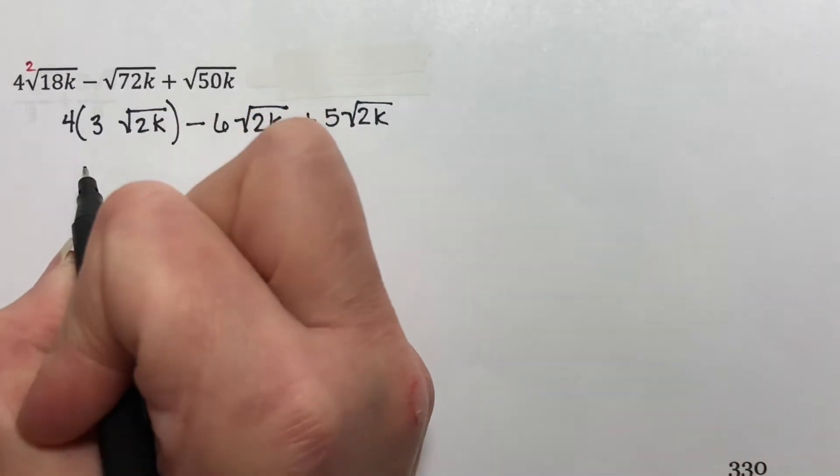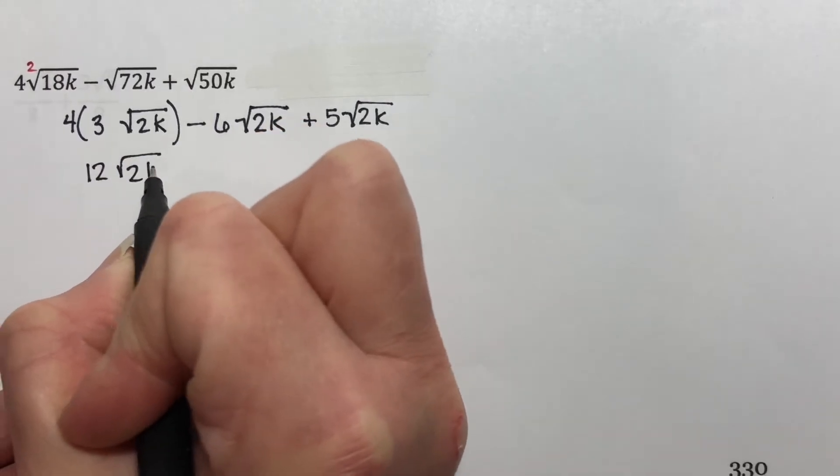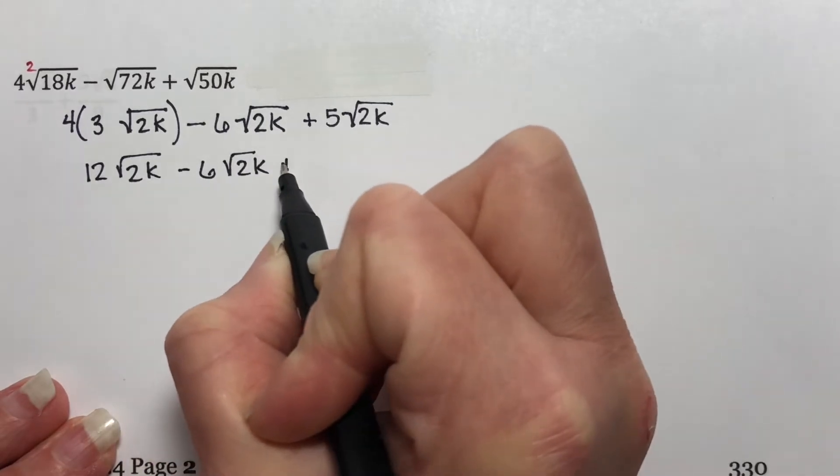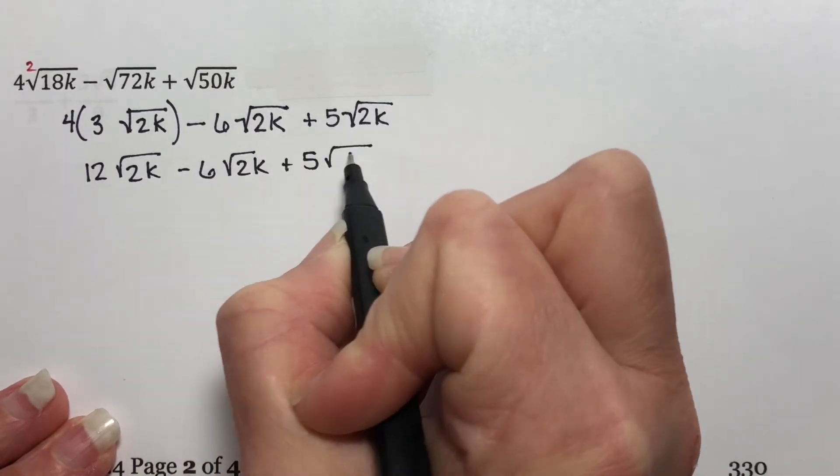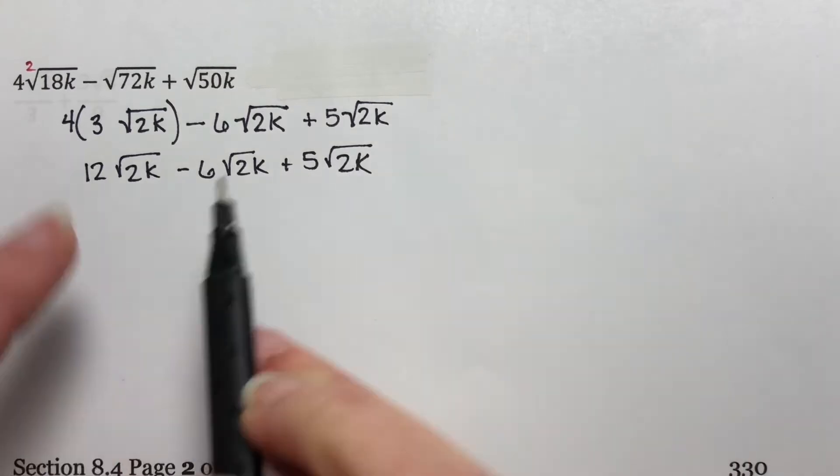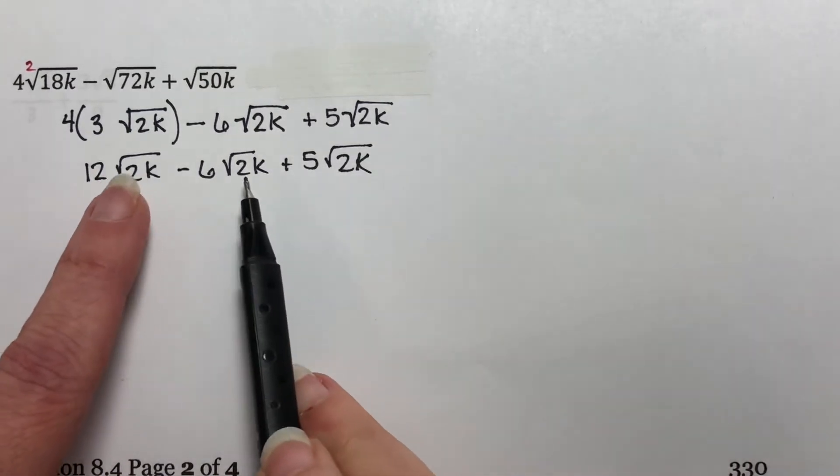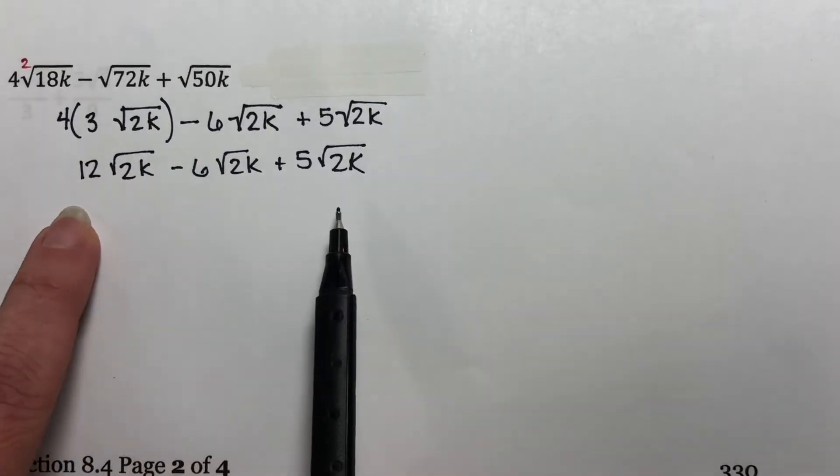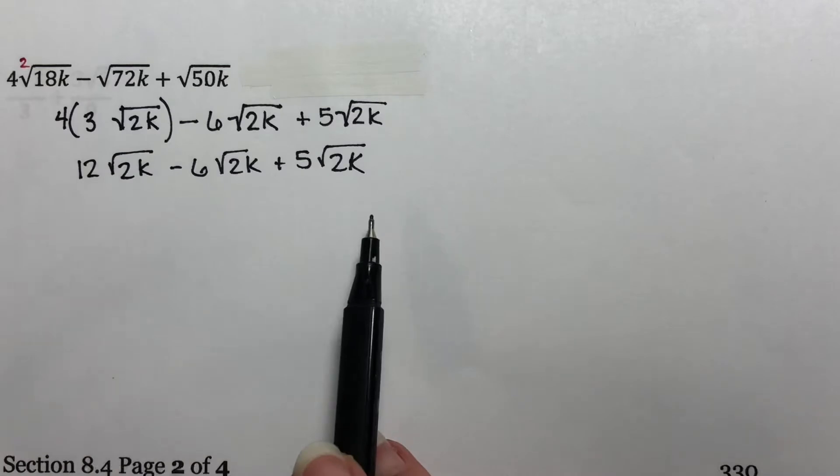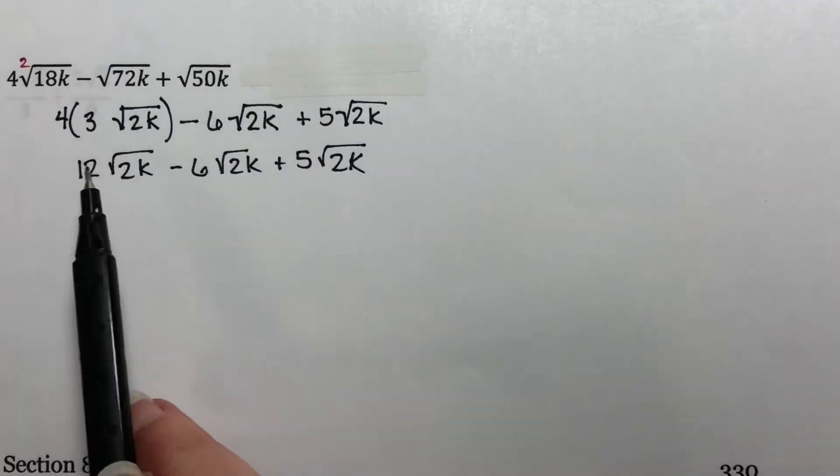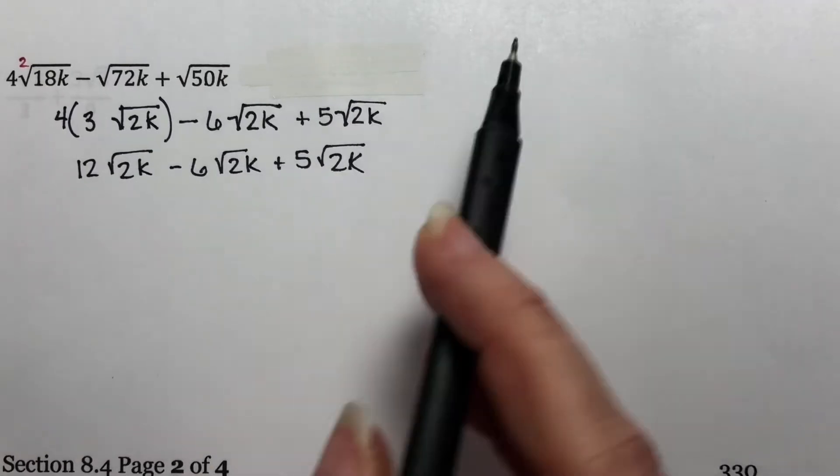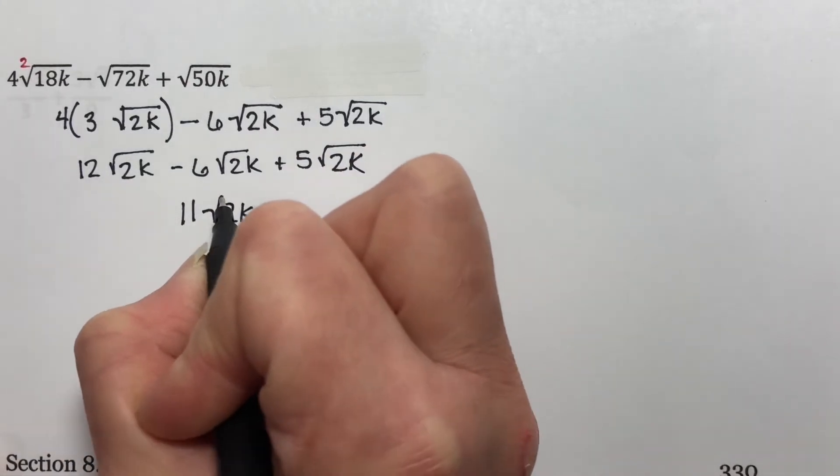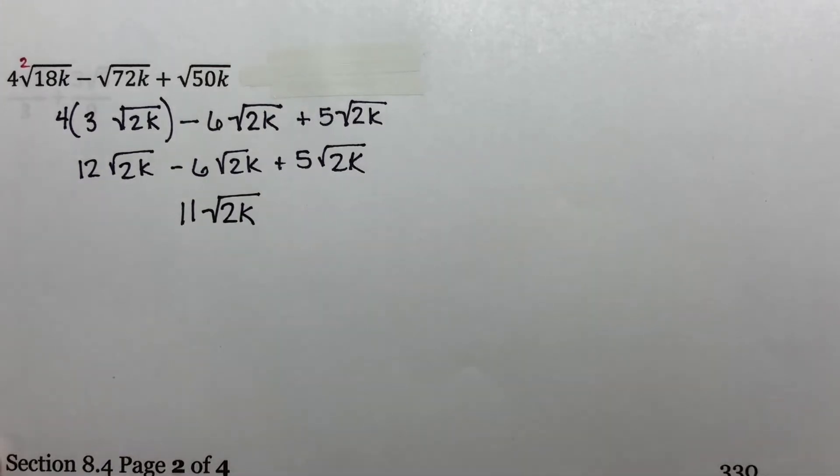So what I have here is 12 times the square root of 2k minus six times the square root of 2k plus five times the square root of 2k. Now each of these has the same square root. We have a two and a k on the inside of each one. They're all square roots, and I do not have any variables on the outside. So that means these are all like terms. I can combine them. 12 minus six is six. Six plus five is 11. So this is 11 times the square root of 2k. And that should be my answer.